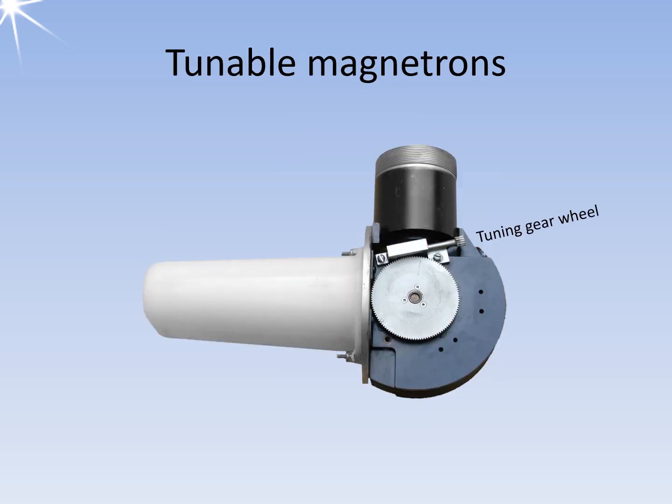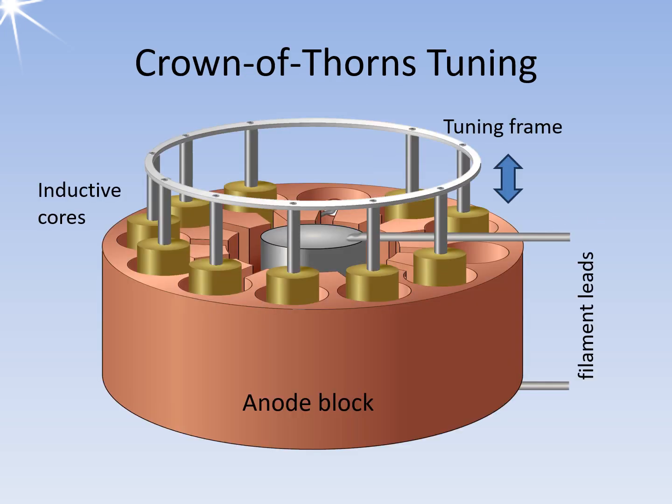With tunable magnetrons, the resonators can be mechanically tuned. The movement is transferred into the vacuum space by pressing a diaphragm-like wall of the tube inwards from the outside. The most common form of mechanical tuning of a magnetron is the so-called crown-of-thorns tuning. Here, tuning pins made of brass or aluminum are inserted into the resonators and act on the inductance of the resonator. Like coil cores, the penetration depth is a measure of the detuning. As can be seen here in the model, two resonators, the one covered by the heating leads and the one containing the decoupling loop, cannot be tuned. This limits the tuning bandwidth to around 5 to 7 percent.